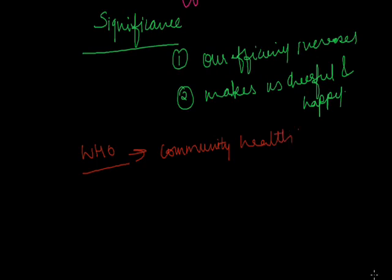The difference between personal health and community health: the state of physical and social well-being of an individual is called personal health. On the other hand, maintenance, protection, and improvement of the health of the whole community is called community health. In personal health, only the individual maintains his or her health, but in community health, the whole community remains healthy.